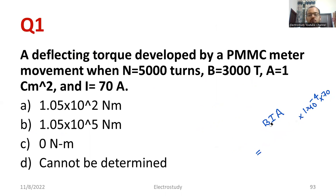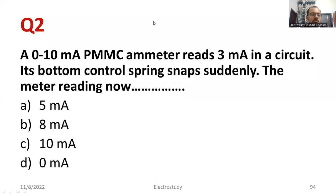I need to solve a similar kind of problem further. Please pay attention. Let us read the question. A 0 to 10 milliamp PMMC ammeter reads 3 milliampere in a circuit. Its bottom control spring snaps suddenly. The meter reading now...